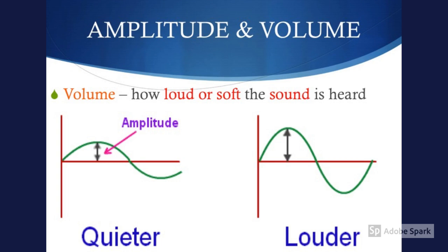The relationship between amplitude and volume. Volume is how loud or soft the sound is heard. The lower the amplitude, the quieter the sound, and the higher the amplitude, the louder the sound.